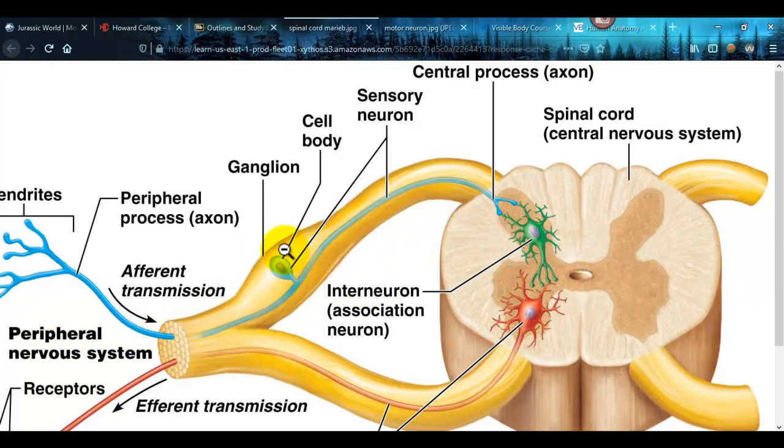And then here is the dorsal root ganglion. Here's the dorsal root, the ventral root, and that's why the ganglion is swollen because it has all these little cell bodies. These are unipolar cell bodies. Here are the dendrites for a unipolar neuron.